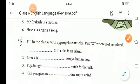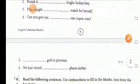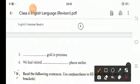Then, in the fifth one, you have to cross. No article is required. Gold is precious. Sixth one is, we had visited the places earlier.